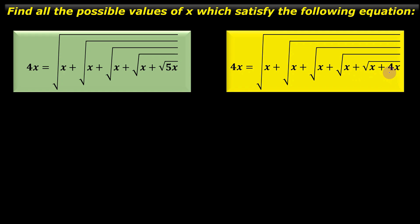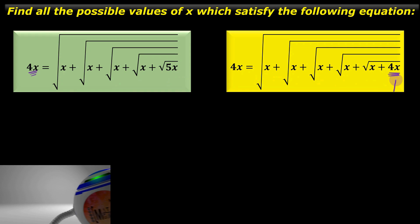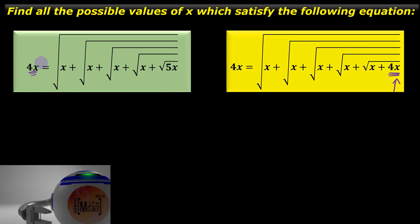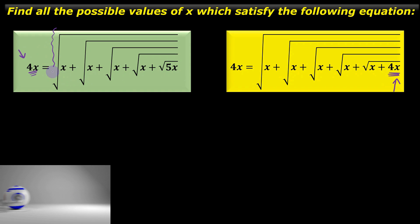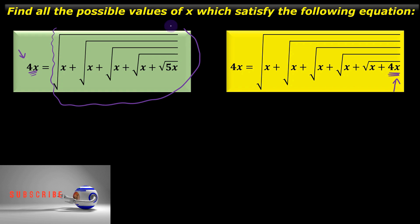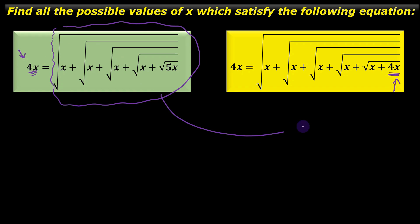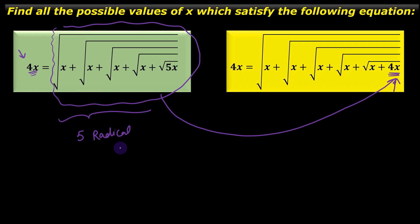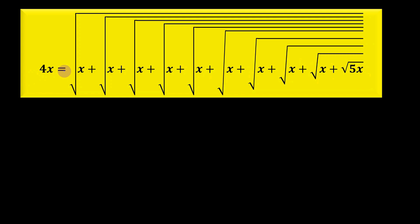Now, we have the quantity 4x over here and this is also equal to 4x. So we are going to replace this 4x by the original expression for 4x and substitute it in the second expression. As you can see, there are 5 radical signs over here, and when you replace this 4x by the original 4x expression, we get an expression with 10 radical signs.